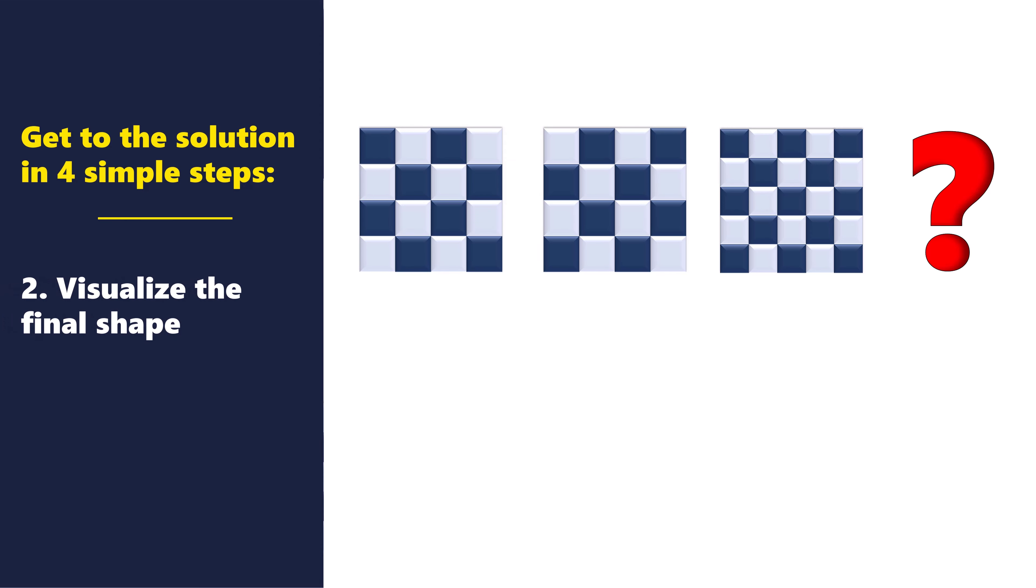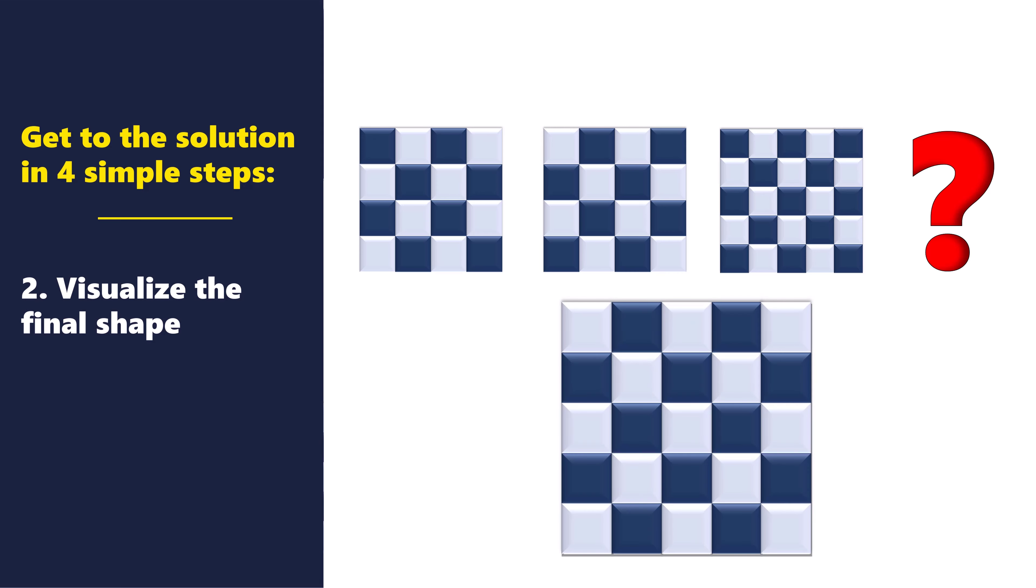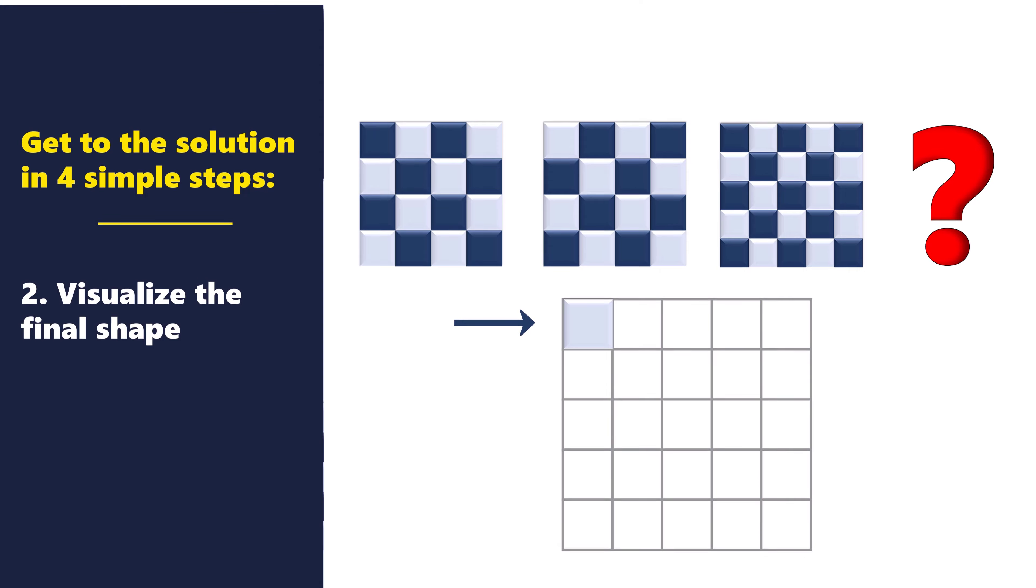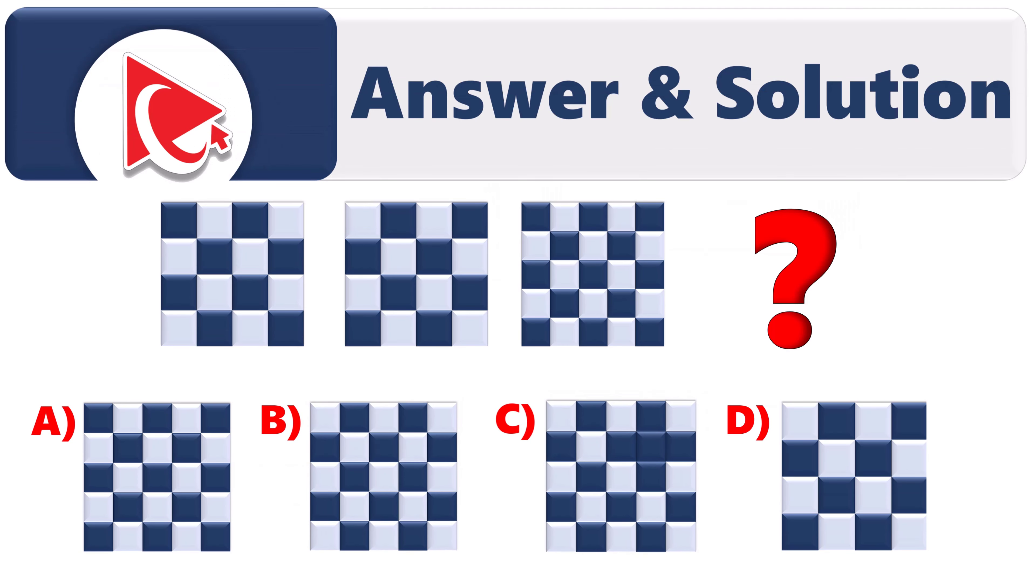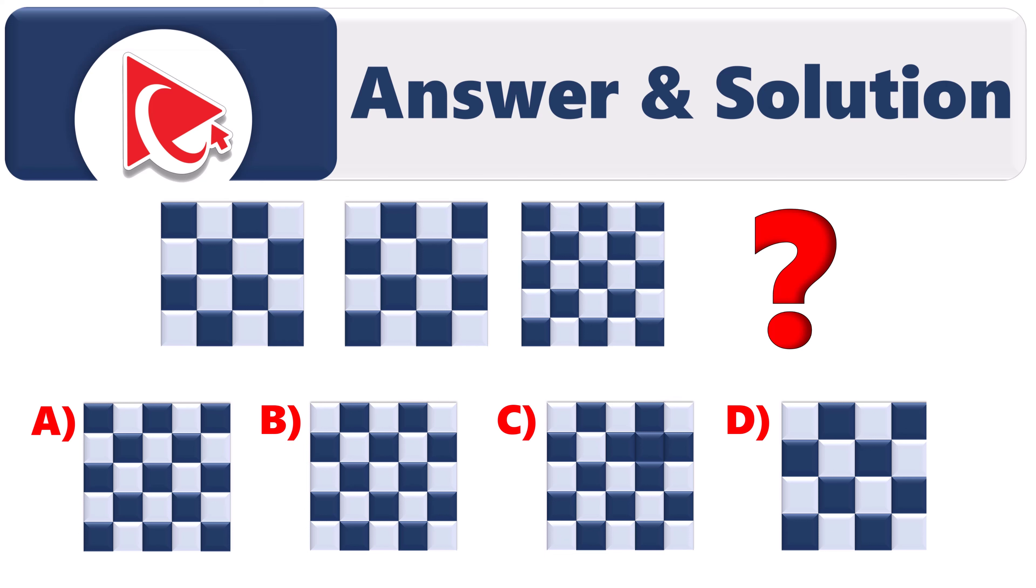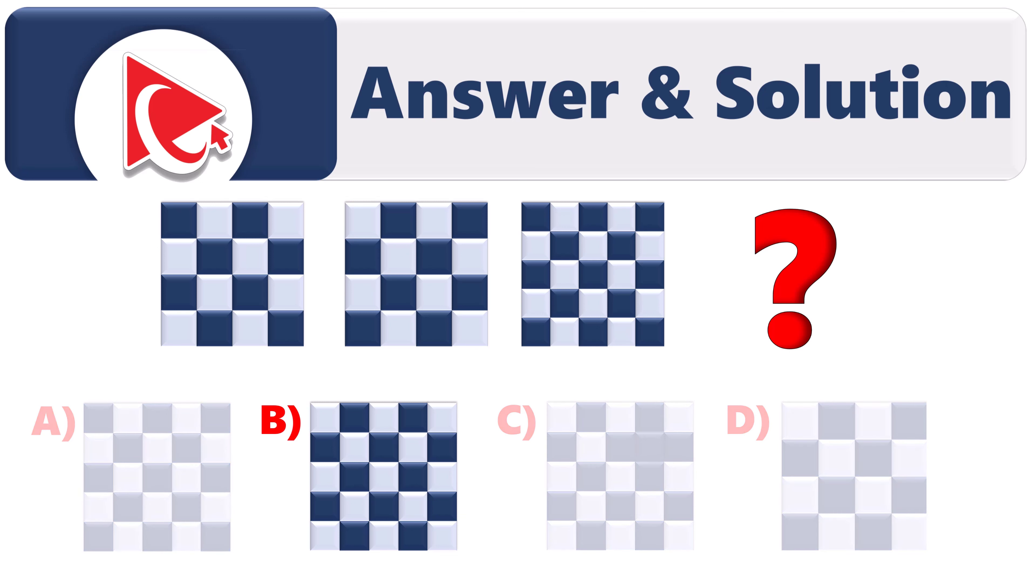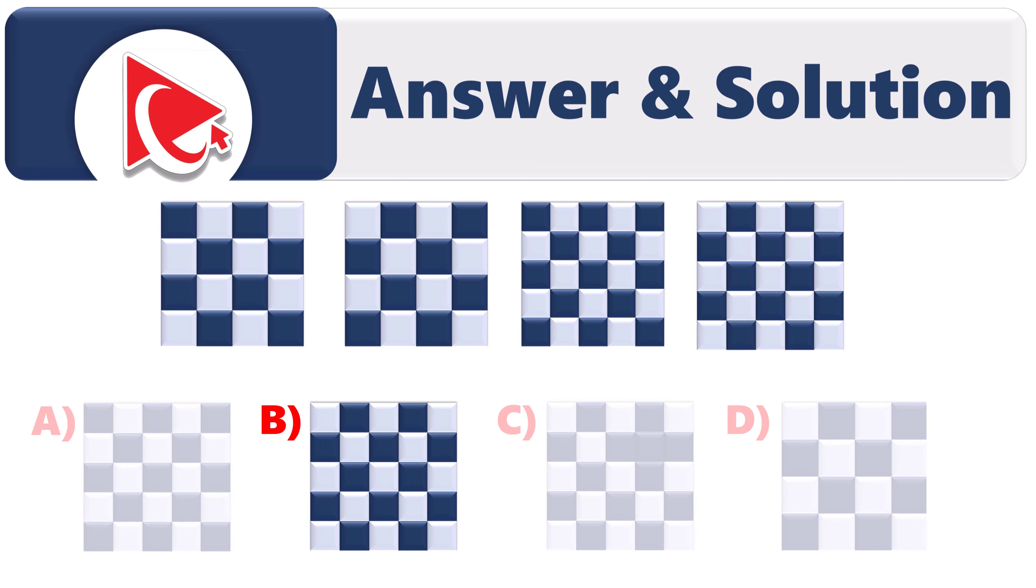In step two, we need to visualize the final shape. Based on what we've just learned, our final shape should be 5x5 in size with alternating colors, and should have a lighter small square in the upper left corner. There are two choices that match this option, choices B and C. In step three, let's eliminate the incorrect options. Option C is incorrect, because choice D2 is the extra dark object, which creates a cross. This leads us to step four, where we verify our answer. The correct answer here is choice B, because it matches all the criteria and continues the sequence.